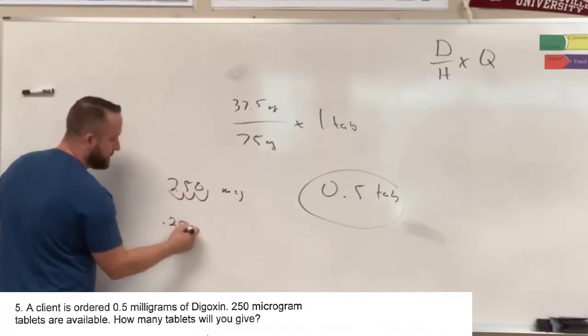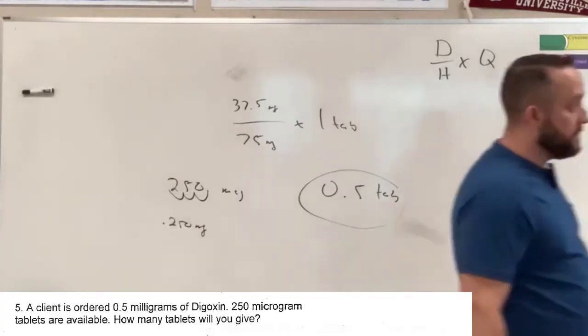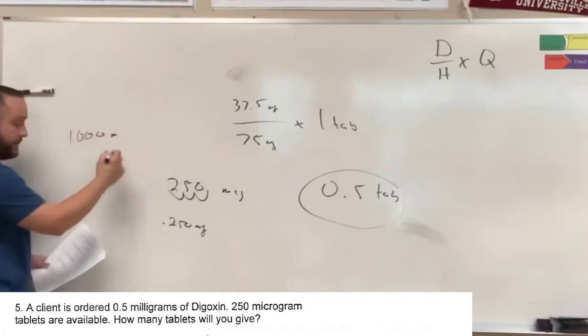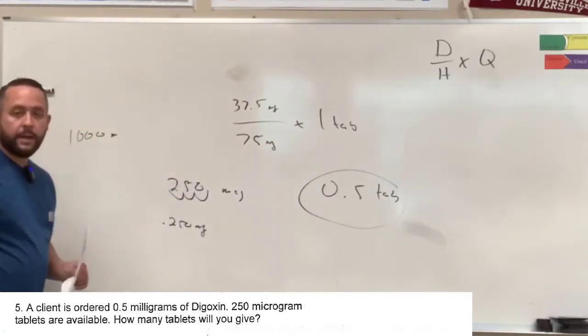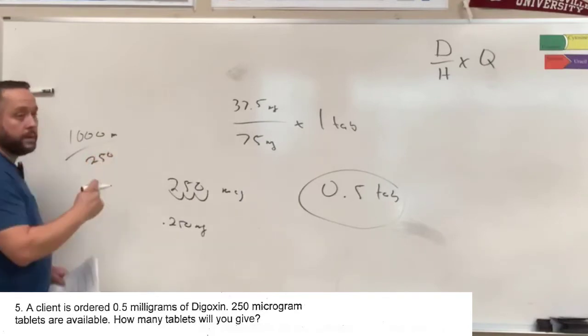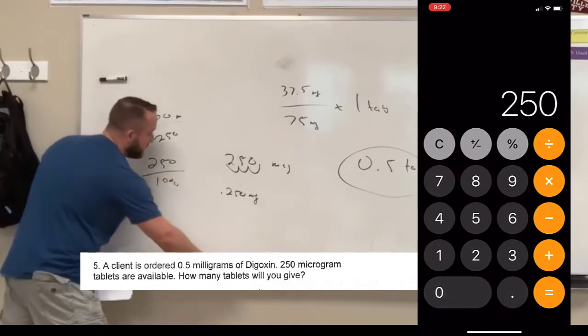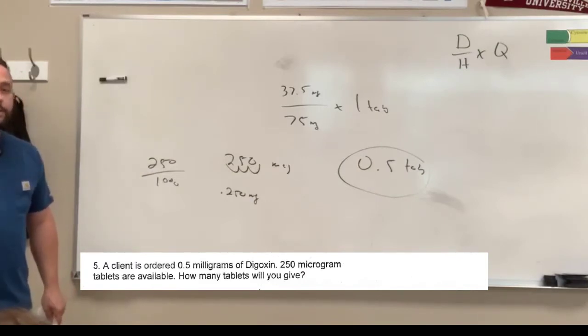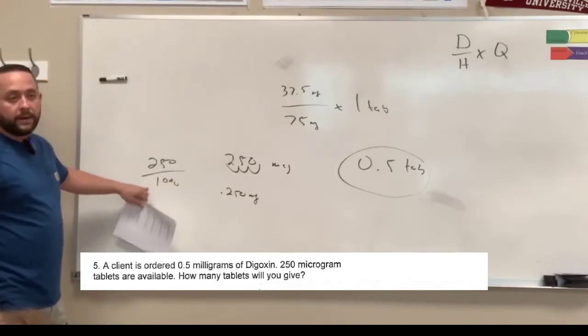I could take the decimal in micrograms and move it to the left three times and say 0.250 milligrams. Let's test our theory out. Let's take a thousand, because there's a thousand micrograms in a milligram. Let's take 250 micrograms and divide that by one thousand and see what number you get. So we just converted a measurement in two different ways: I moved my decimal and I divided it by a thousand.